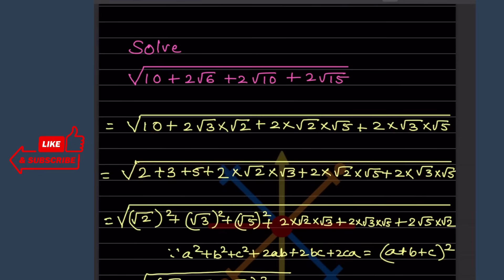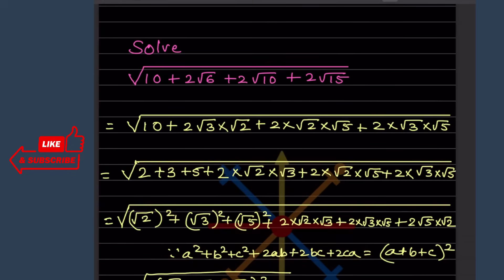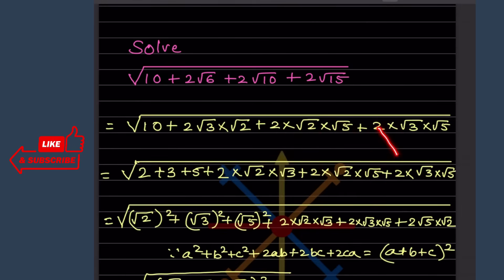Now we will just rearrange, because we are going to use this formula — I'll tell you why we are going to rearrange later. See here: √2 × √3, and same this will be as it is.